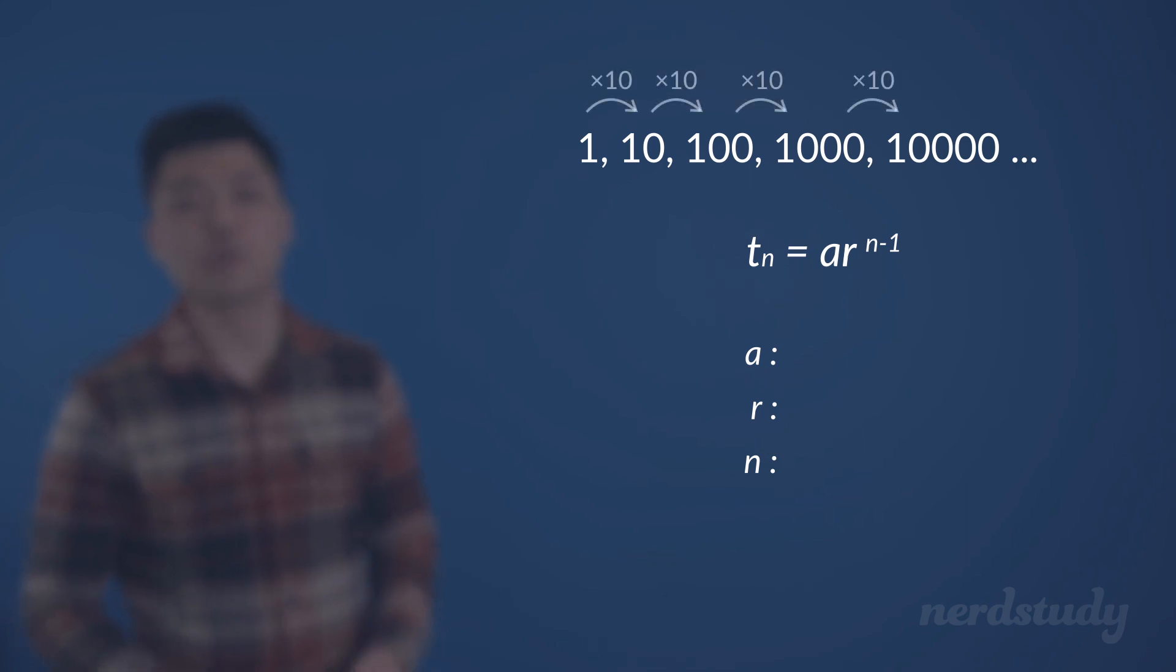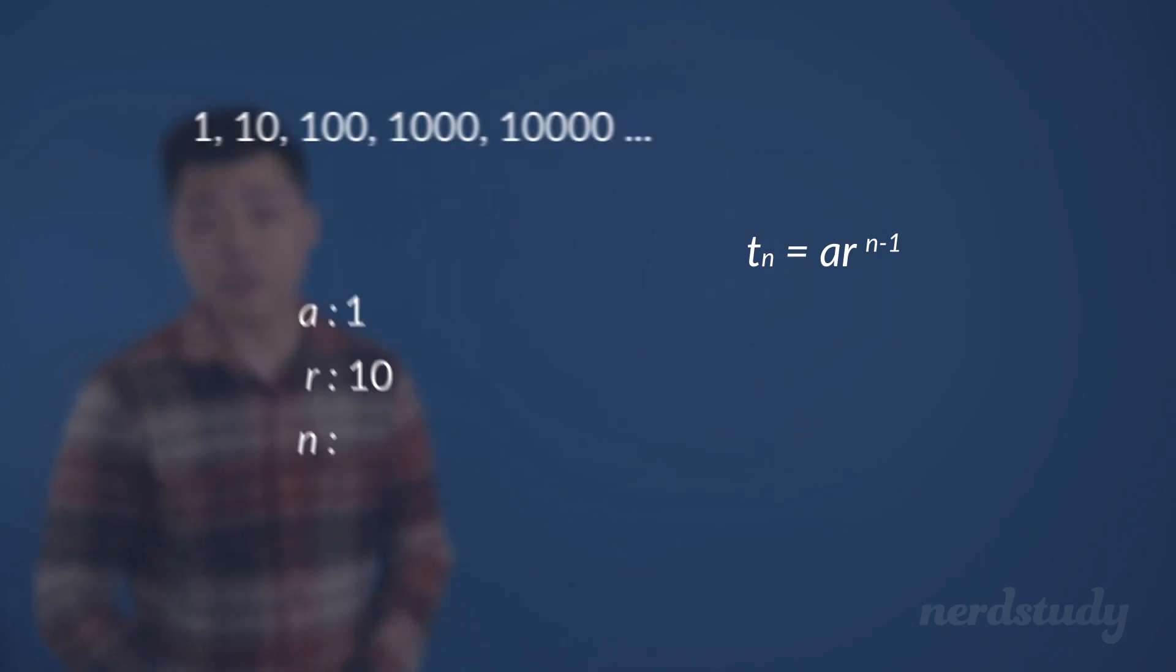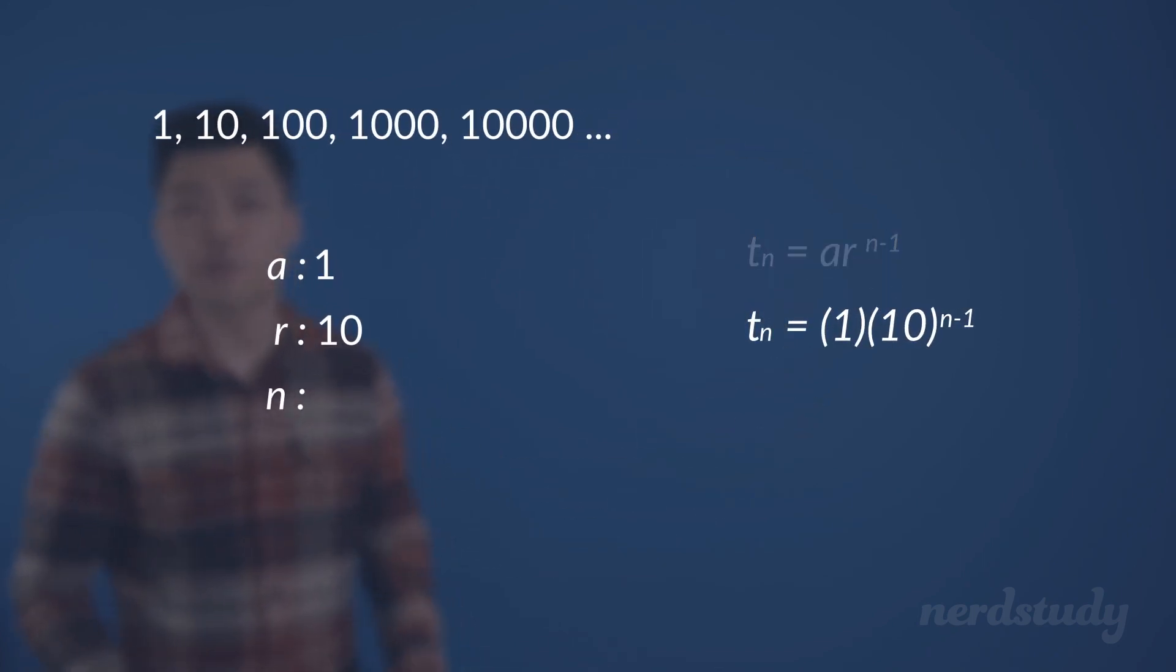Therefore, our common ratio here is clearly 10, making that our r value. And since our first term here is 1, we can also establish that as our a. So plugging in the following information gives us our base formula for this sequence.